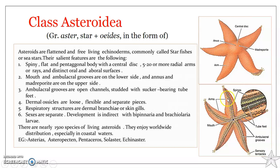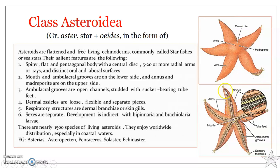Radiating from the mouth to each arm is an ambulacral area. 'Ambulacra' is a Latin term meaning an alley or covered path. This area extends from the mouth to the tip of each arm. Sea stars typically have five arms, but some may have more, usually in multiples of five. There are as many ambulacral areas as there are arms. An ambulacral groove is found along the middle of each ambulacral area.